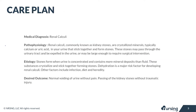Renal calculi are more commonly known as kidney stones. These kidney stones form when crystallized minerals like calcium or uric acid get built up and stick together in the urinary tract. When this happens, it can cause a problem and create a blockage in the urinary tract.